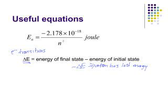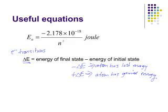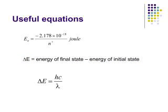And a positive delta E would mean that the electron had to absorb energy, the atom has gained energy, in order to excite that electron. So we can use the first equation to find the energies of the states, we take their difference.